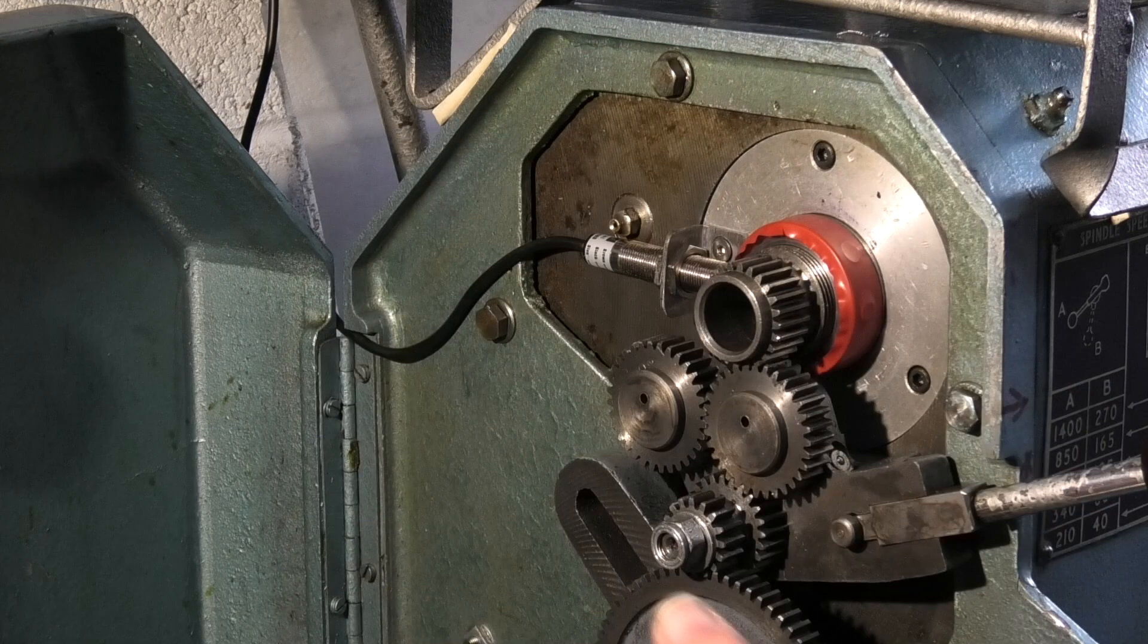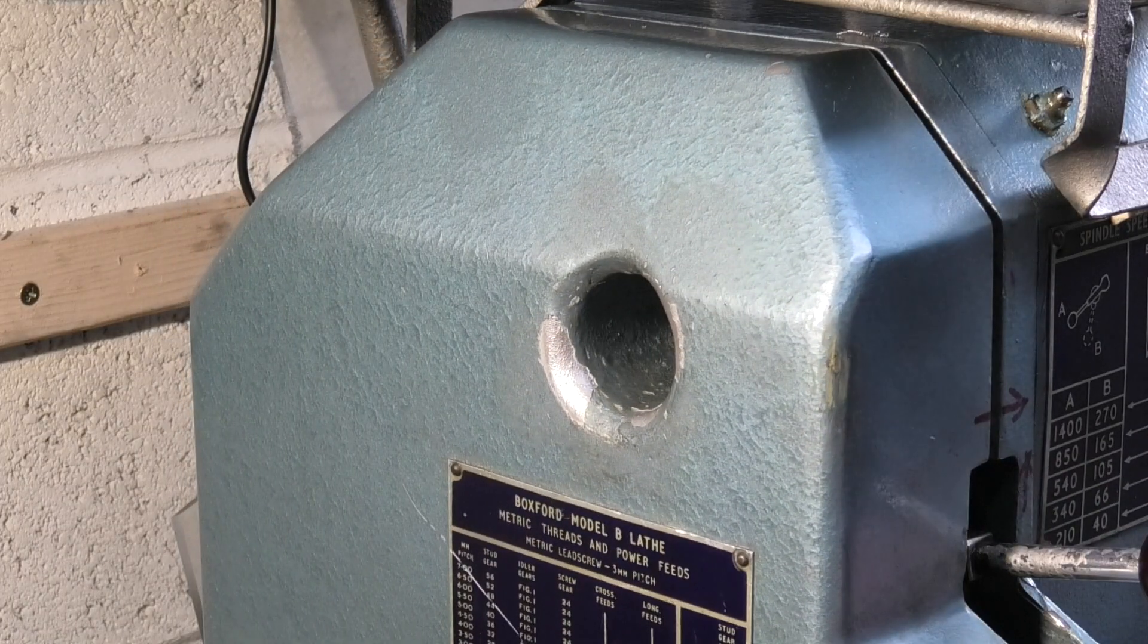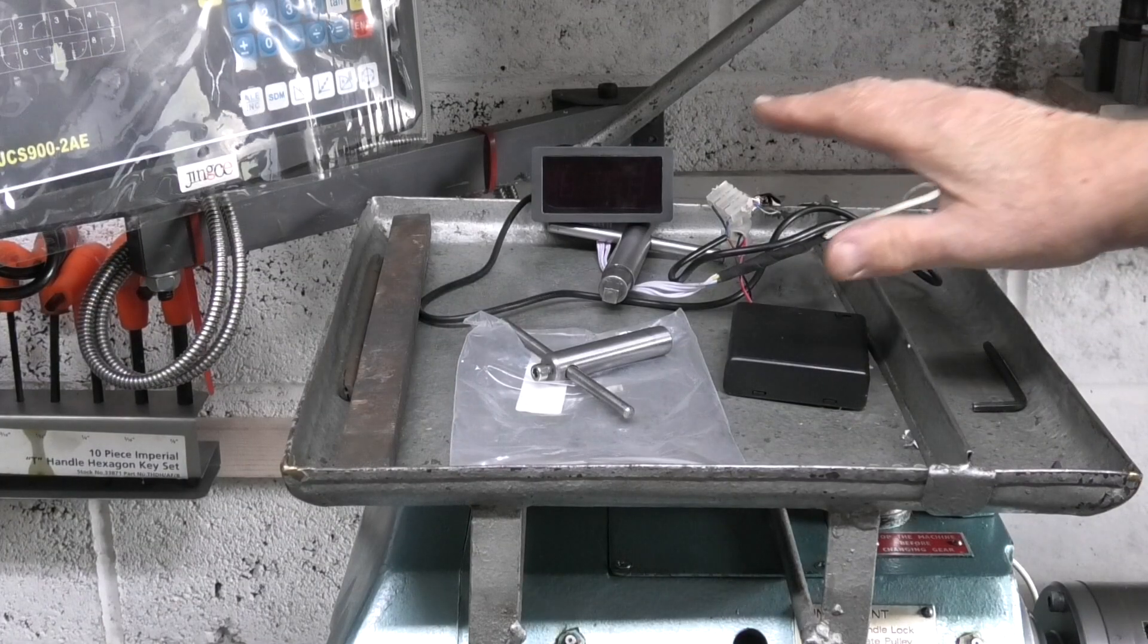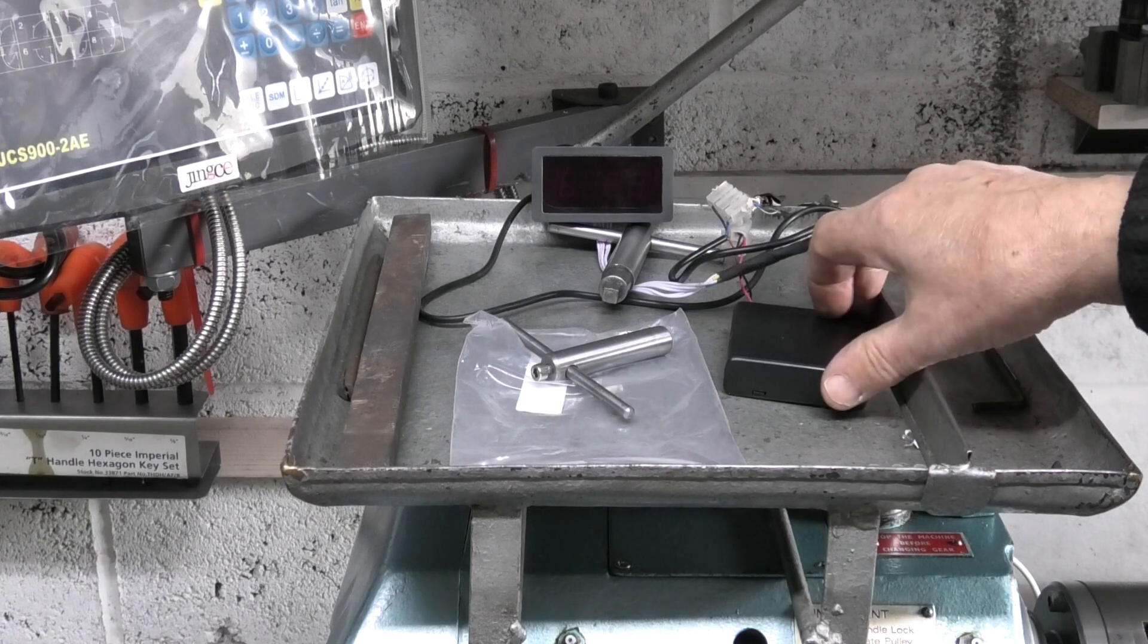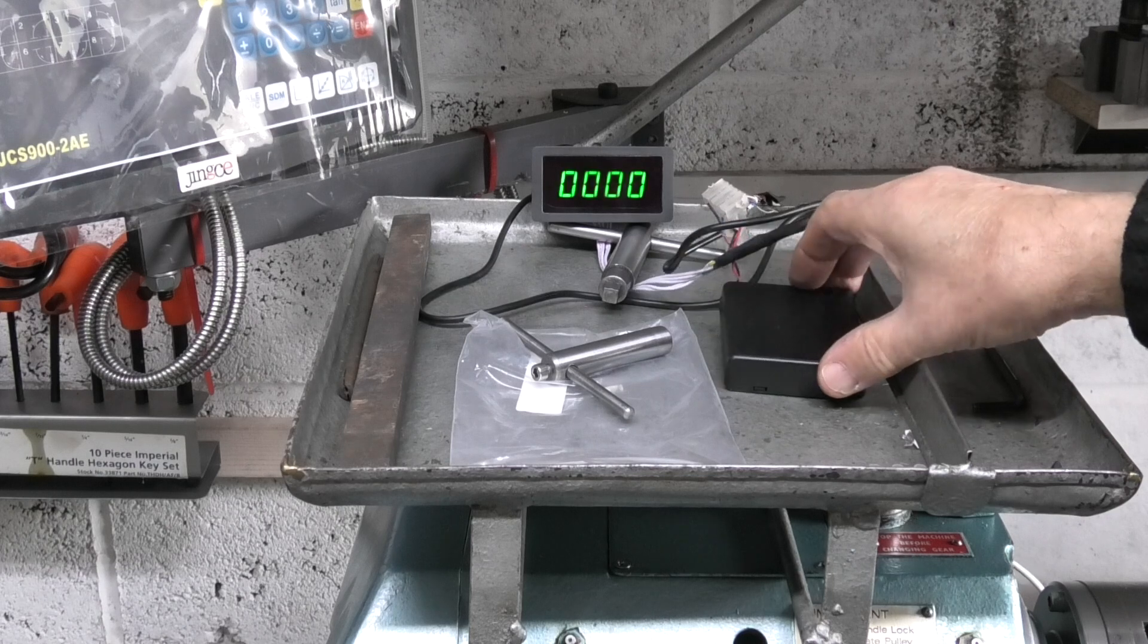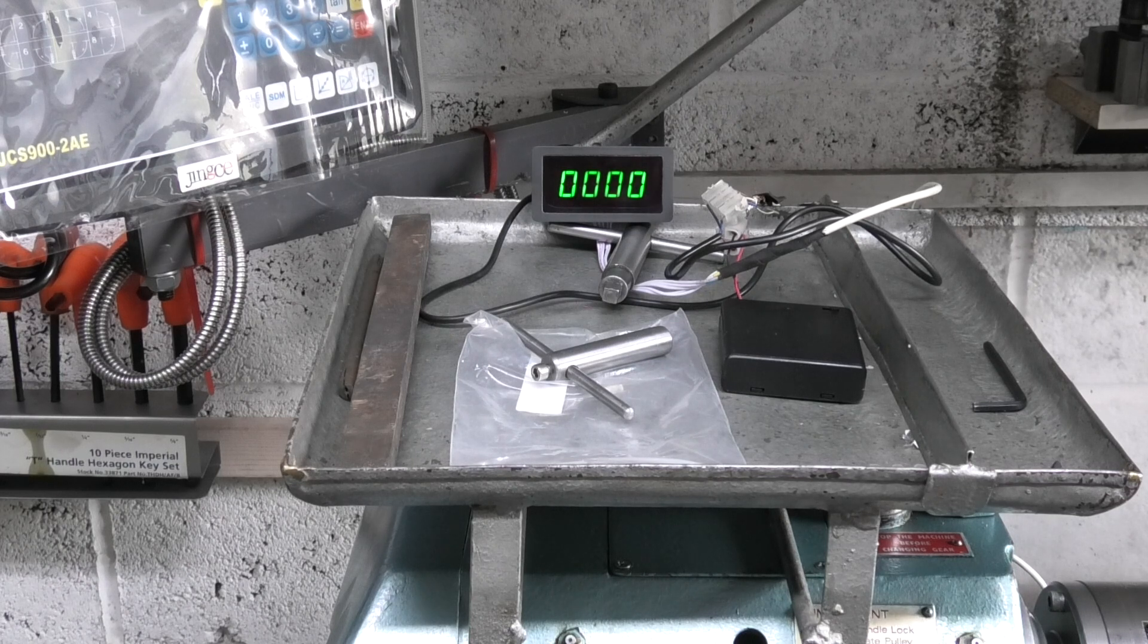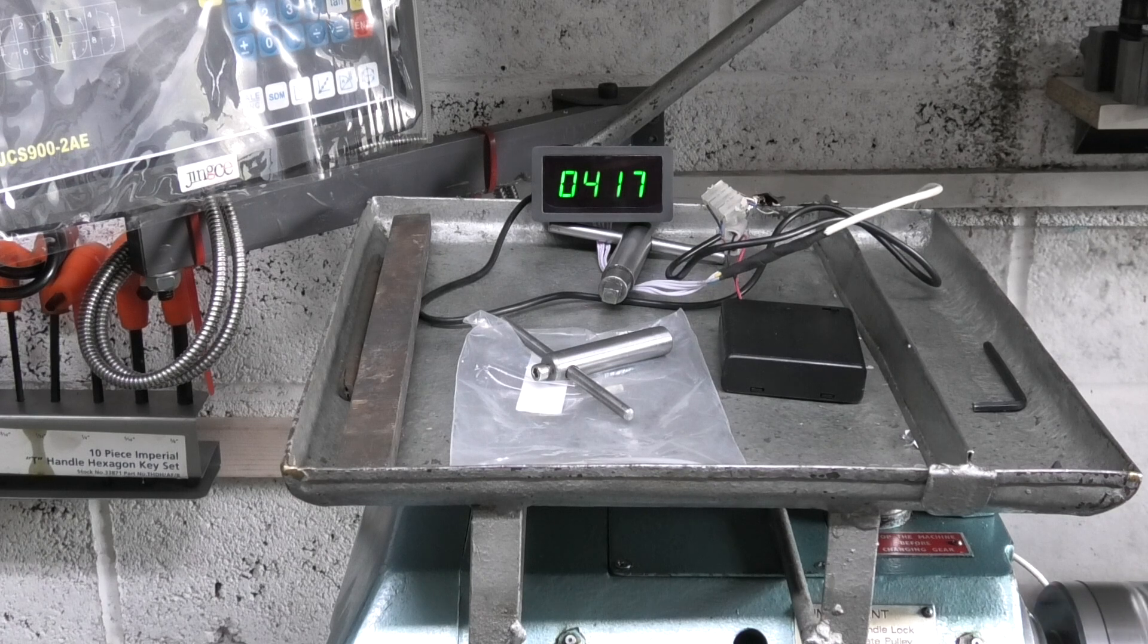Eventually this will be wired through the back of the lathe under the bed to the power supply at the front. So this is just a temporary battery box. I'll switch it on. Turn the lever. Gives the display of the revs.